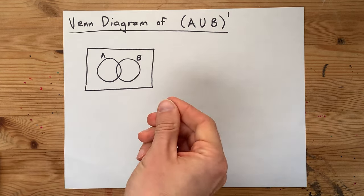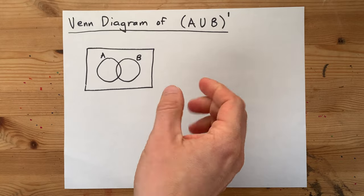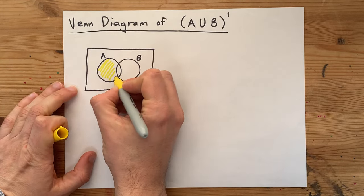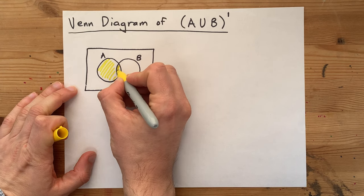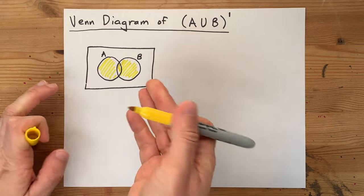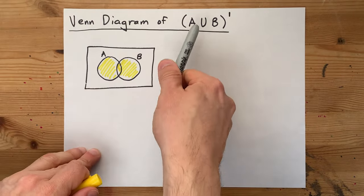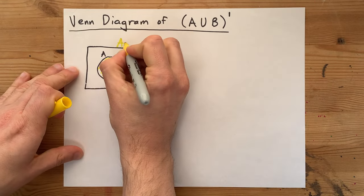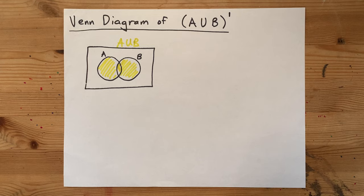Now, the union of these two is anything that's in either or both of them. So, what I'm highlighting in yellow here is A. This is also A, so it counts. And this is B, so it also counts. That's what union means. It's either or both of them. So, I'm even going to label this A union B.